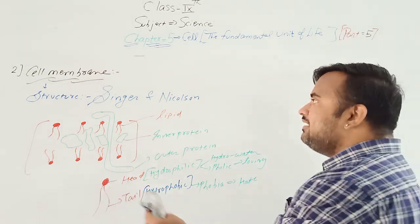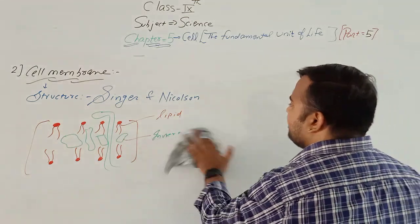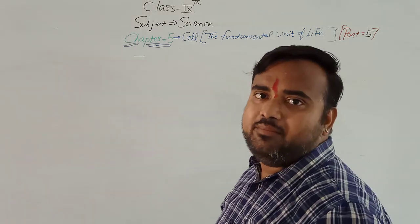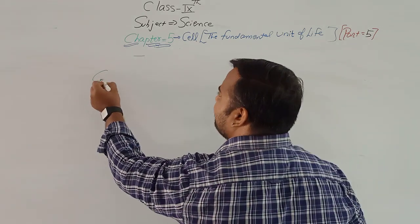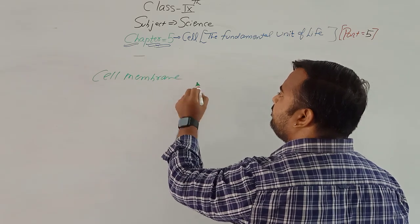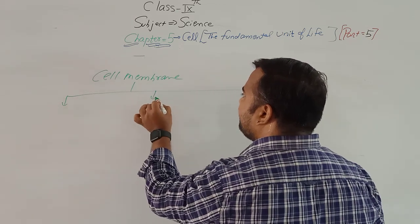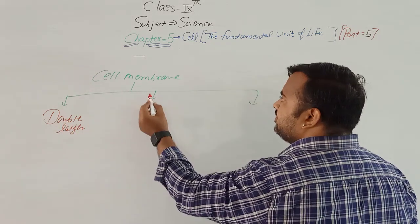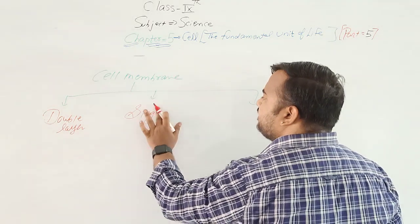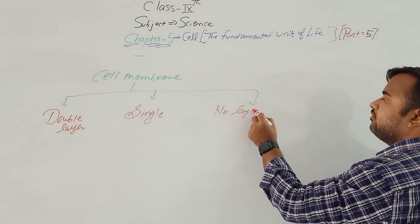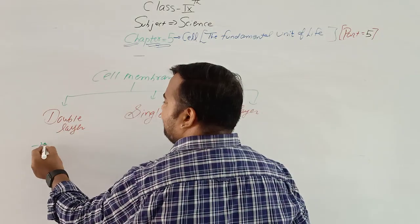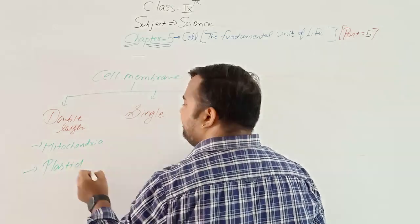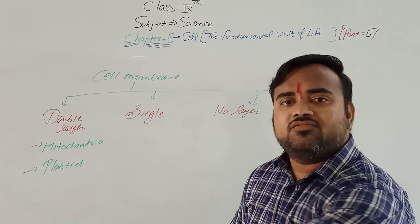After cell membrane, the next structure is mitochondria. Depending upon the layer of cell membranes, cell organelles are divided into three types. Some cell organelles have a double layer — under double layer, the first would be mitochondria and the second would be plastid.